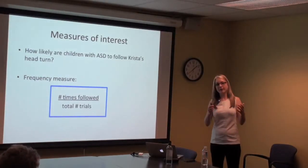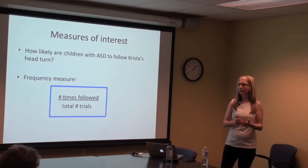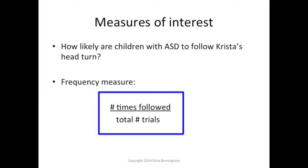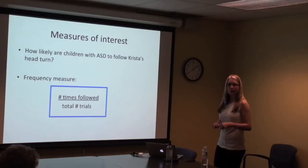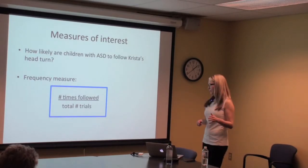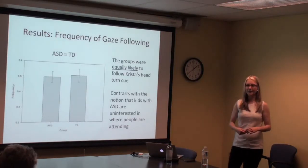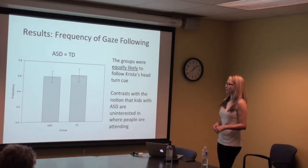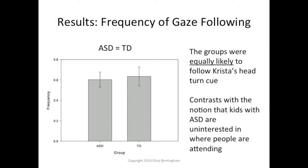We measured more quantitatively: how likely are children with ASD to follow Krista's head turn? We used a frequency measure — the number of times they followed her head turn divided by the total number of trials, giving a proportion. The result: no differences between groups, and very overlapping data, so it's not a power issue. The groups were equally likely to follow Krista's head turn, which really contrasts with the notion that kids with ASD are uninterested in where people are directing their attention.